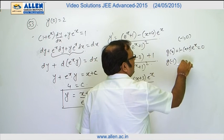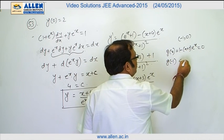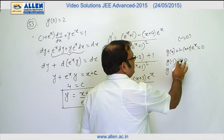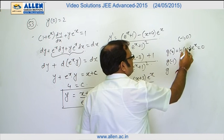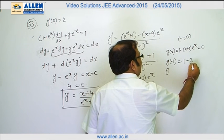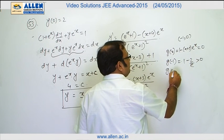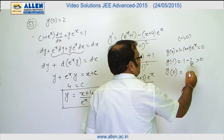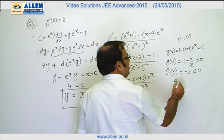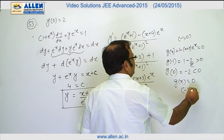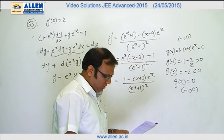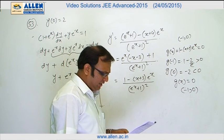So g(-1), if we read g(-1), this is 1 - 2/e, so this is positive. And if we read g(0), then g(0) is -2, so that is of course negative. That means g(x) is becoming 0 in the interval -1 to 0, and therefore the function will definitely have the critical point in the interval -1 to 0. And therefore the option numbers A and C are the correct options to this question.